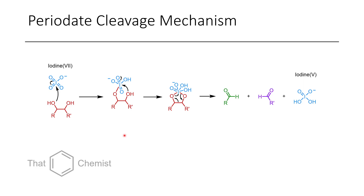The mechanism of periodate cleavage looks somewhat similar to the osmium tetroxide mechanism, except we already have our alcohols installed. The two hydroxy groups attack the iodate one at a time, and then through a concerted mechanism we cleave the carbon-carbon single bond, reducing iodine from an iodate (iodine +7) to an iodine +5 species. This produces two equivalents of aldehydes when starting from secondary alcohols. The iodine +5 byproduct is not of interest; an excess of periodate is used since it's a cheap reagent.